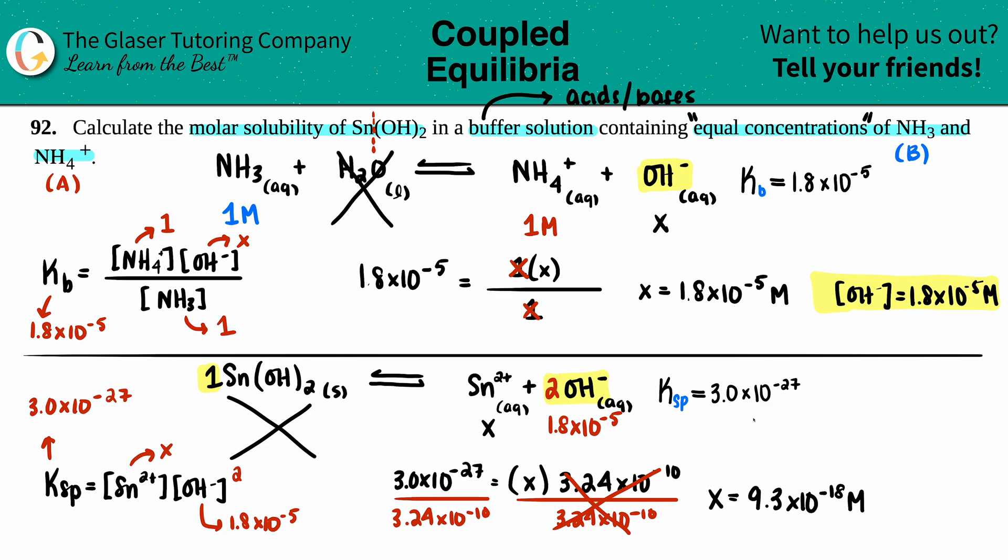So the molar solubility would be 9.3 times 10 to the negative 18th molarity of that compound, Sn(OH)2, and that is your final answer. Not bad.